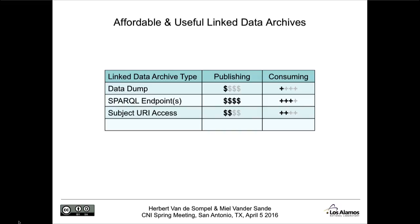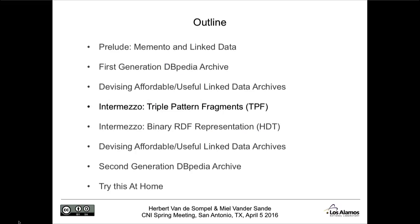So this is an overview of this admittedly non-scientific evaluation. When you compare these three ways of making linked data archives available — data dump, SPARQL endpoint, and subject URI access — you see that I left a row open. That's of course for the solution that's going to be really great. I'm going to hand over to Miel now, because he's going to introduce two technologies that are, from an archival perspective, really interesting for access to linked data.